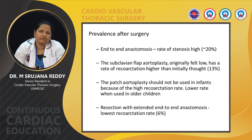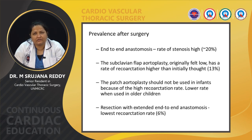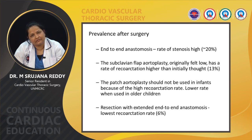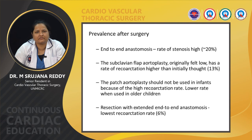Regarding recoarctation rates by procedure: end-to-end anastomosis has a documented high recoarctation rate of nearly 20%. The subclavian flap aortoplasty was originally said to have a low rate, but further studies proved recoarctation rates as high as 13%. Patch aortoplasty is not advised in infants due to high recoarctation rates, though in older children the rates are quite less. Resection with extended end-to-end anastomosis has the lowest recoarctation rate among all procedures, at around 6%.